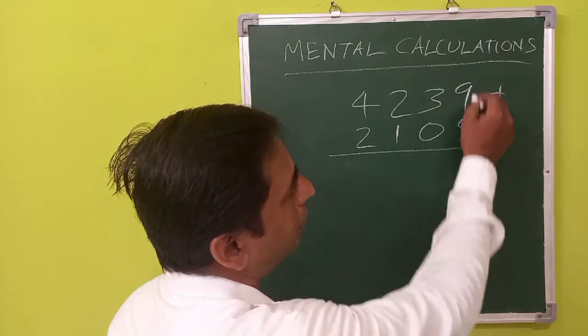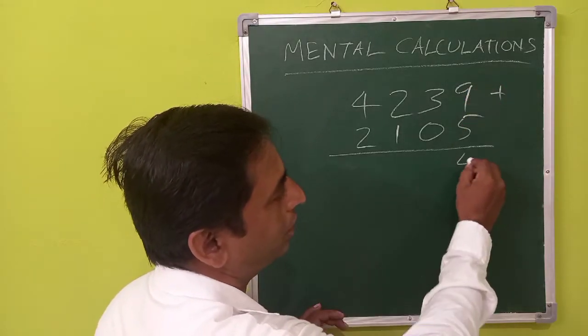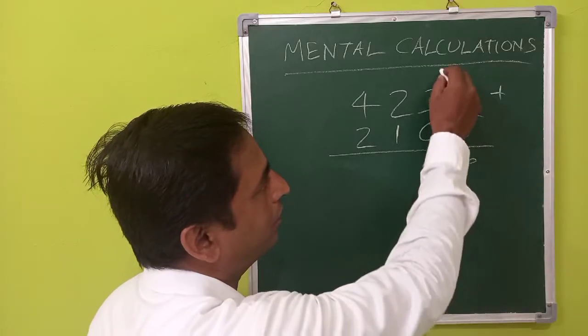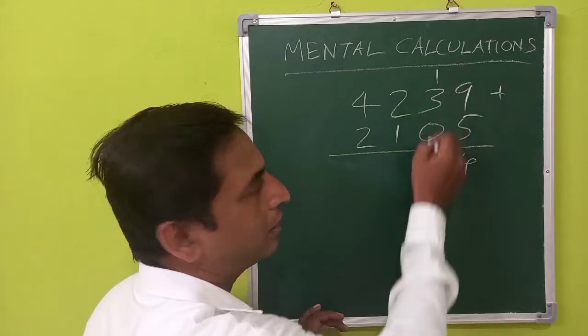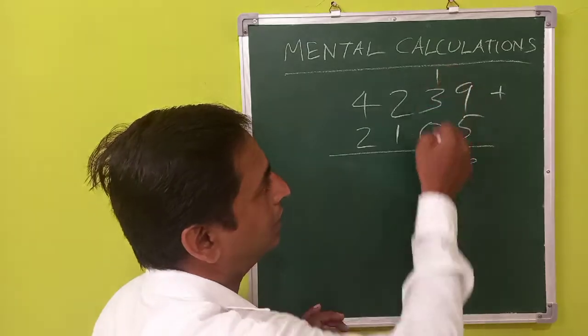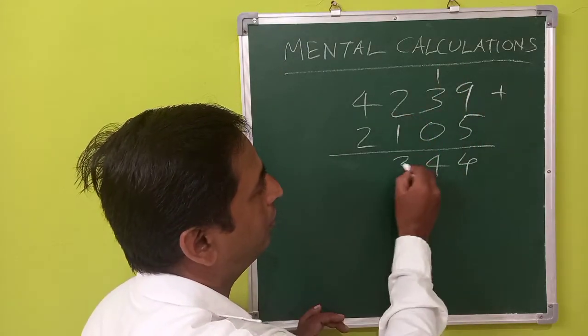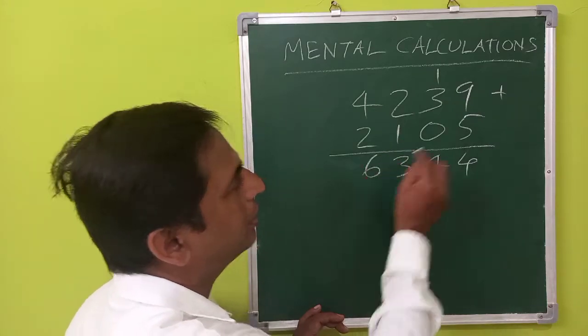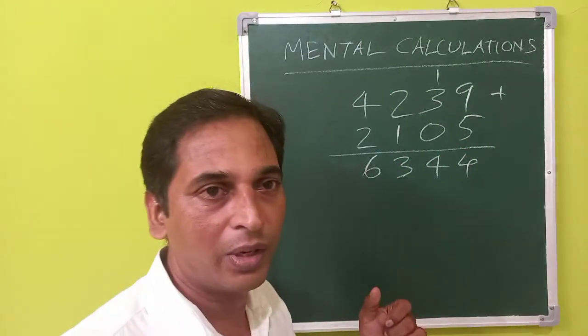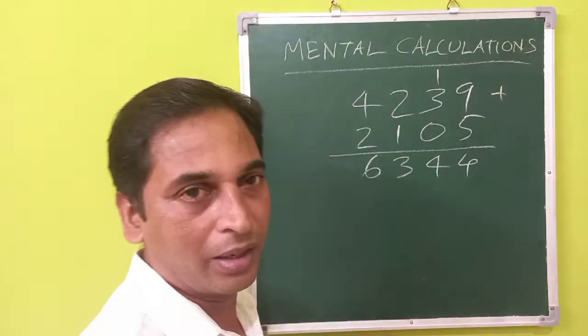So we'll be adding 5 plus 9 is 14, and there is a one carry forward that will be added to the next pair of numbers, so that will give you 4, and there is no remainder, then it will be 3. This is easy when you have a paper and pen.